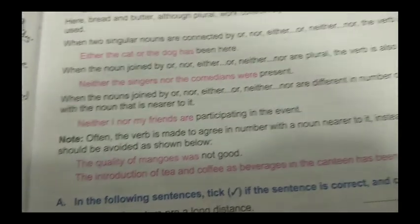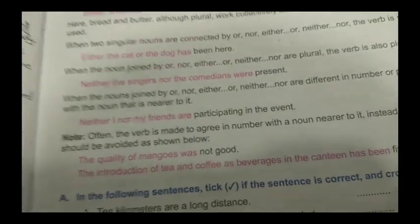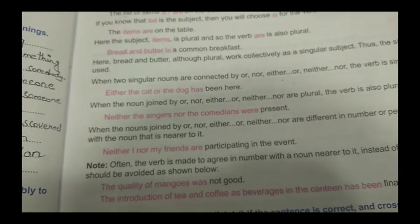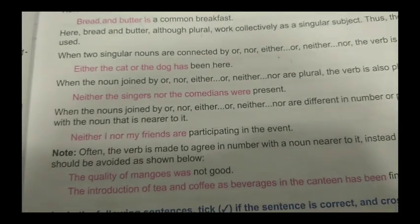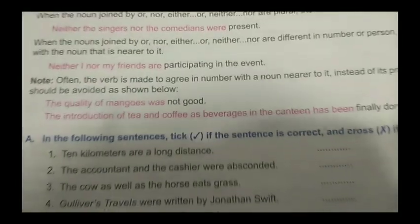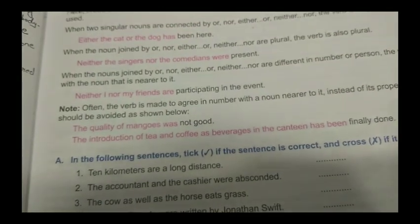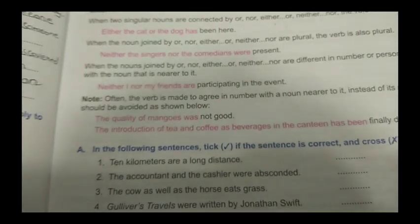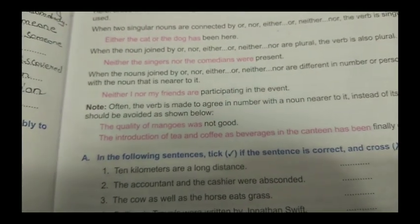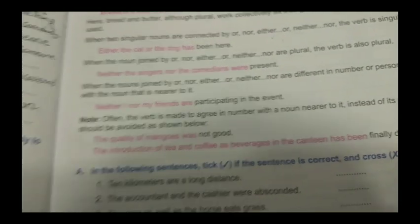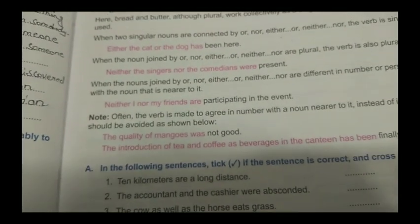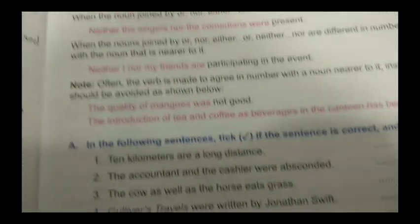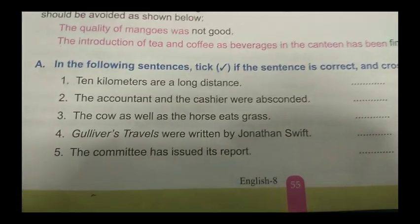In subject-verb agreement, we have to identify the subject in the sentence and match it in number and person. The sentence should clearly show whether the subject is singular or plural. We need to specify the subject and verb along with their number — whether singular or plural — so that the sentence is correct and meaningful.